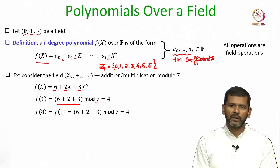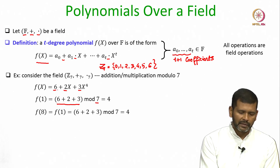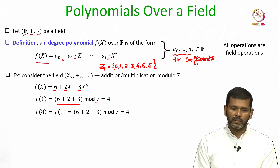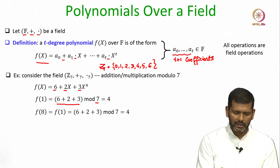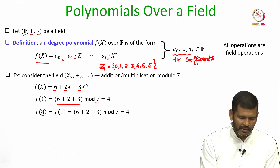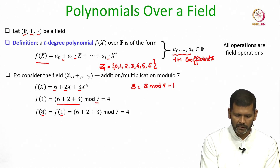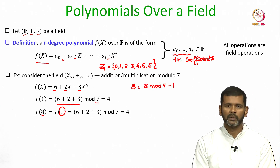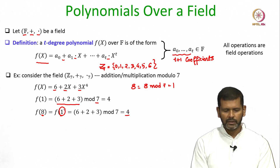If we want to compute the value of this polynomial at x=8, there are two ways. We can substitute x=8, solve, and finally do mod 7. But the element 8 in this field is the same as 1, since 8 mod 7 equals 1. So the value of the polynomial at x=8 is the same as at x=1, which we have already calculated.